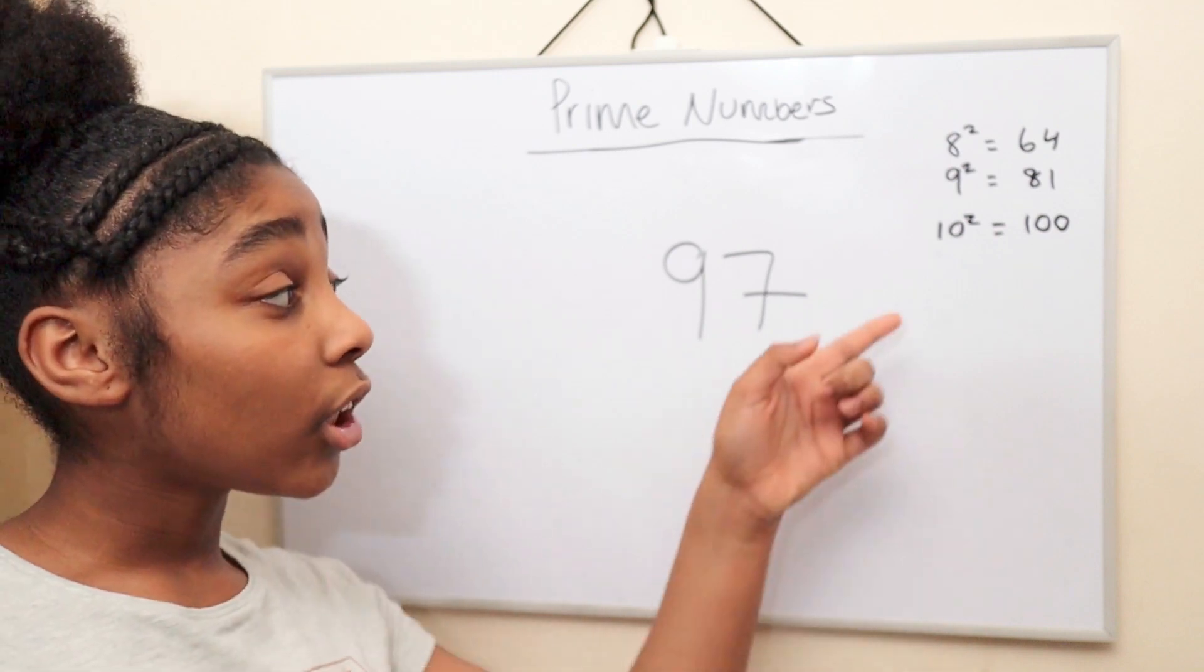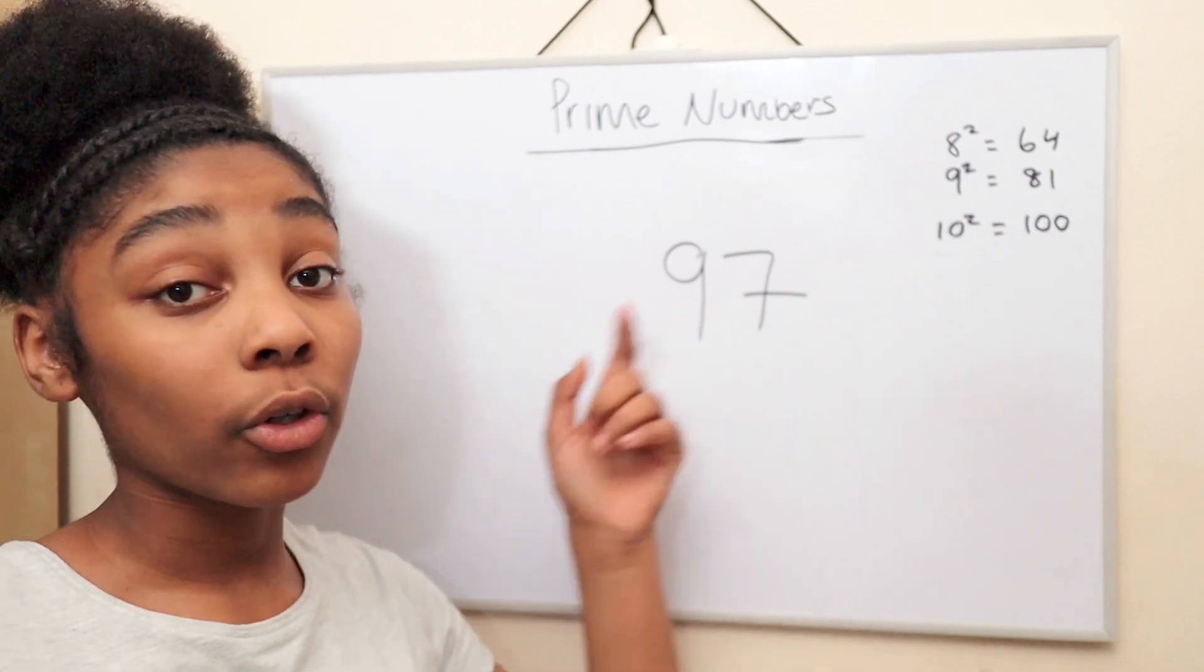As you can see, 100 is bigger than 97, so we can cross that out.